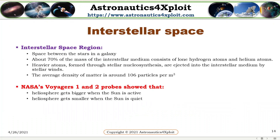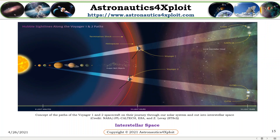Interstellar space: The space between the stars in the galaxy is referred to as the interstellar space region. About 70% of the mass of the interstellar medium consists of lone hydrogen atoms and helium atoms. Heavier atoms formed through stellar nucleosynthesis are ejected into the interstellar medium by stellar winds. The average density of matter is around 1 to 6 particles per cubic meter. NASA's Voyager 1 and 2 probes show that the heliosphere gets bigger when the sun is active and it gets smaller when the sun is quiet. This picture shows the concept of Voyager 1 and 2 spacecraft on their journey through our solar system and out into interstellar space.